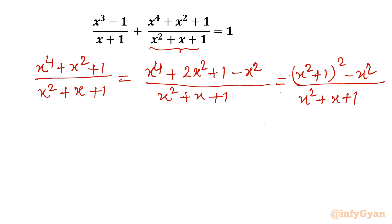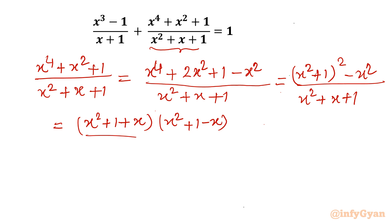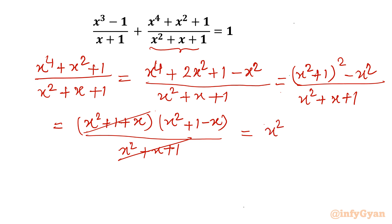Now we apply the difference of two squares formula, a² - b² = (a+b)(a-b). So we write (x² + 1 + x)(x² + 1 - x) divided by x² + x + 1. The (x² + x + 1) terms cancel, and ultimately the second rational term simplifies to x² - x + 1.